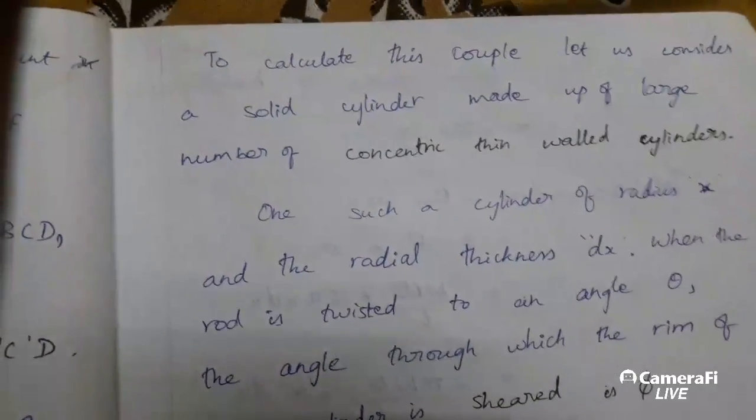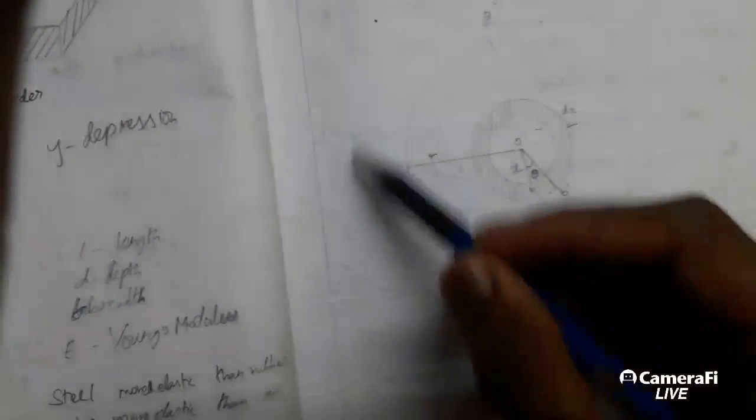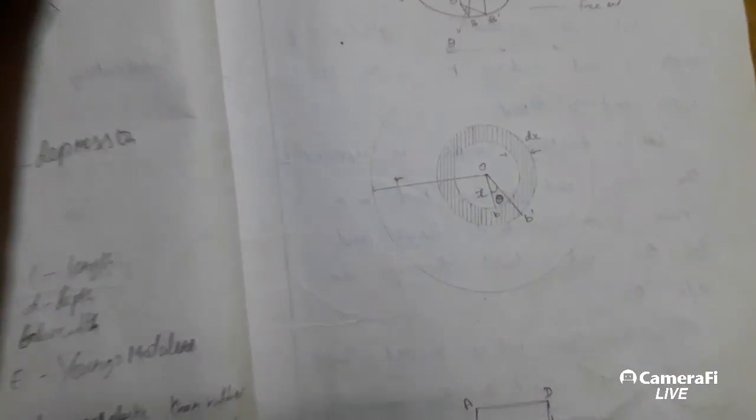To calculate this couple, let us consider a solid cylinder made up of a large number of concentric thin-walled cylinders. As we've seen before, this is the concentric thin-walled cylinder.